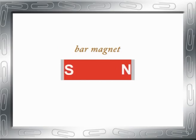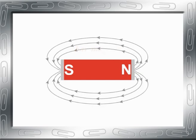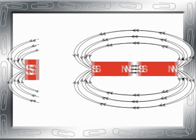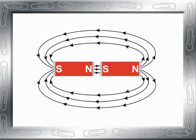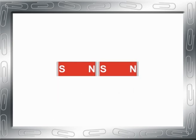Magnets have two poles, a north pole and a south pole, with lines of attractive force running between them. When opposite poles of two magnets face each other, the magnetic force pulls them together.